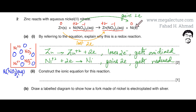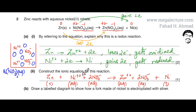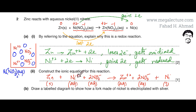Writing the equation in dissociated form: zinc was solid, so it stays as solid. Nickel nitrate was aqueous, so its ions dissociate — nickel ions and nitrate ions are written separately, with the coefficient two placed in front of NO₃⁻. Zinc nitrate produced is also aqueous and dissociated. Nickel solid remains as a solid.